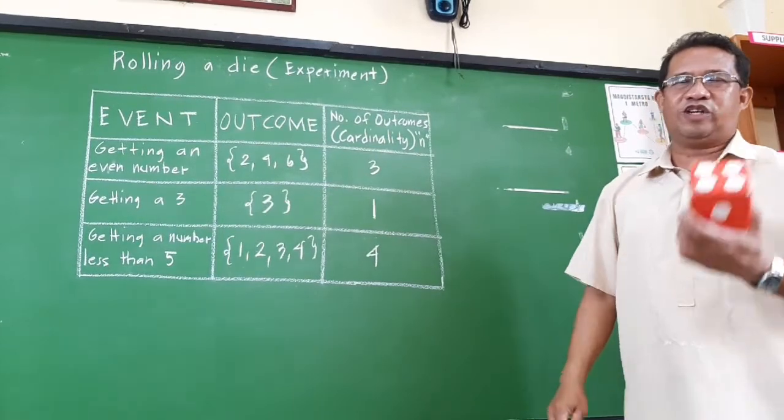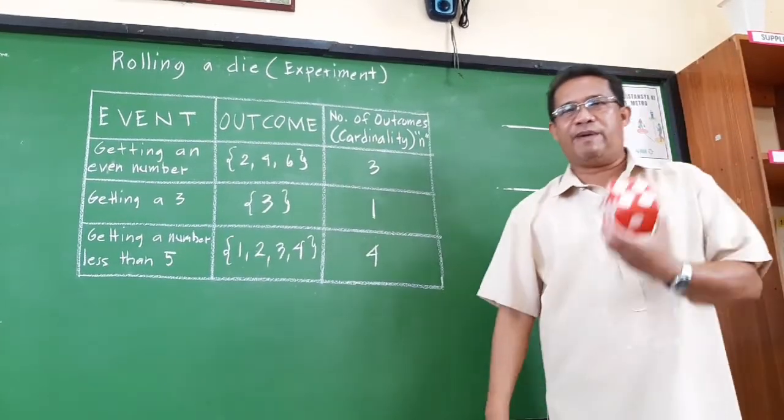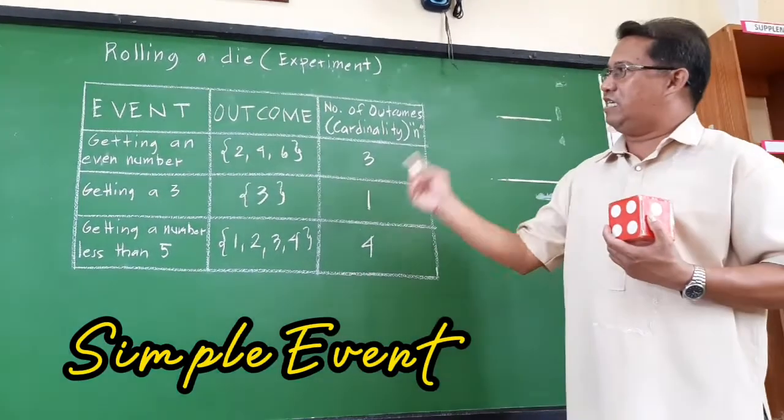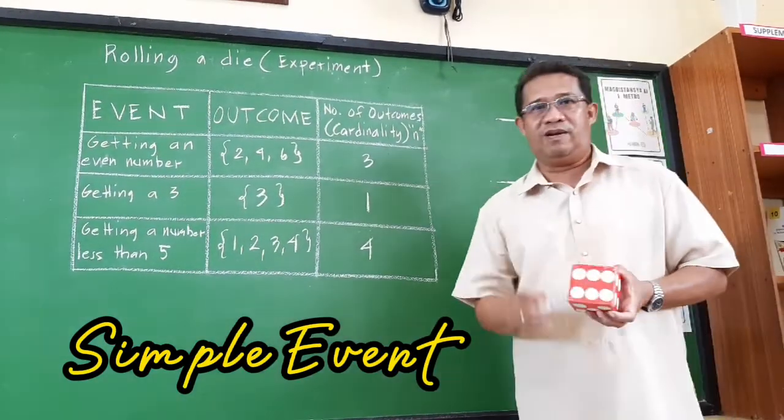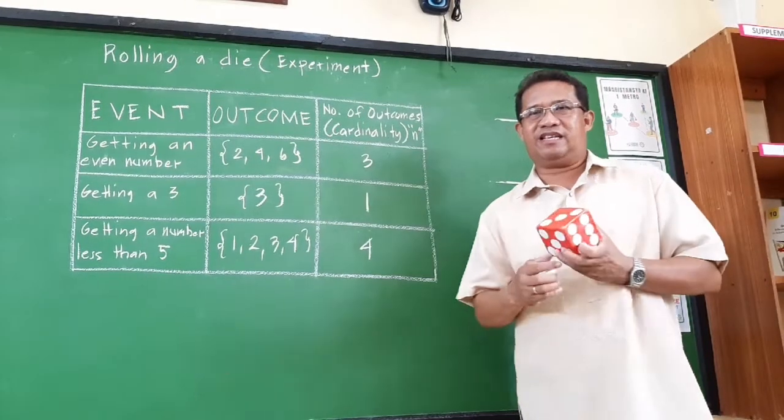The number of outcomes is called cardinality, denoted by a small letter N. Also, the experiment is called a simple event.